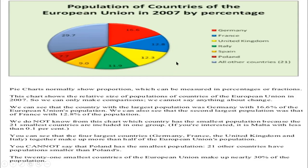Maroon indicates Poland, and the gray portion indicates all other countries. Pie charts normally show proportions which can be measured in percentages or fractions. This chart shows the relative size of populations of countries of the European Union in 2007, so we can only make comparisons — we cannot say anything about change. The country with the largest population was Germany with 16.6% of the European Union's population.